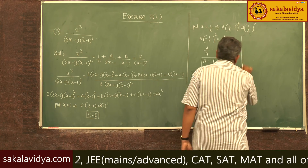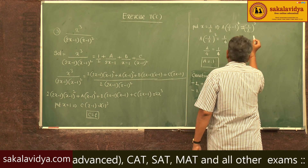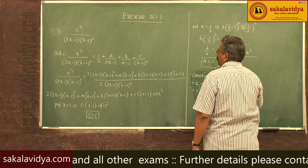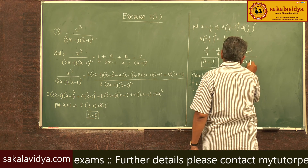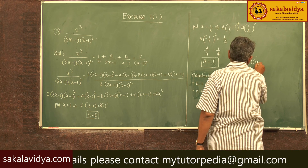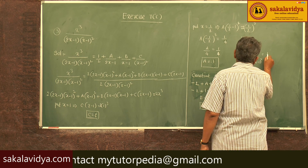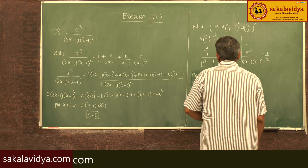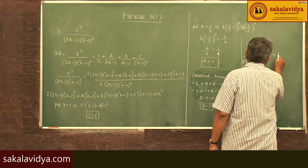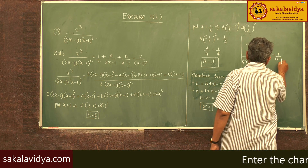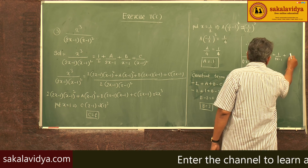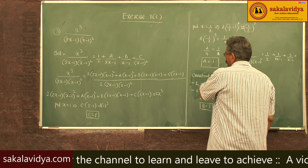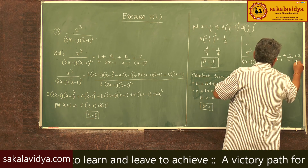Therefore, the required partial fractions are: x cube by (2x minus 1)(x minus 1) whole square equals 1 by 2 plus 1 by 2 of (2x minus 1) plus 3 by (x minus 1) plus 2 by (x minus 1) whole square. Wait — where A equals 1 by 2, B equals 3, C equals 2.